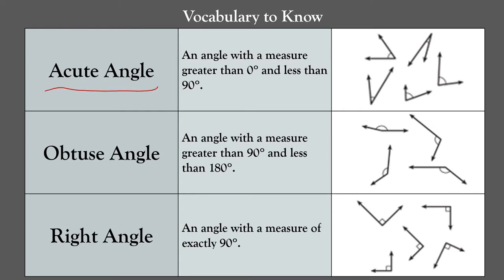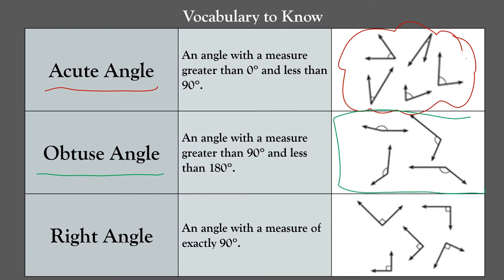We need to review some vocabulary to help us with classifying triangles. An acute angle is an angle with a measure greater than zero degrees and less than 90 degrees — we have several examples here. An obtuse angle is an angle with a measure greater than 90 degrees and less than 180 degrees. Finally, a right angle is an angle with a measure of exactly 90 degrees, shown by a small square.